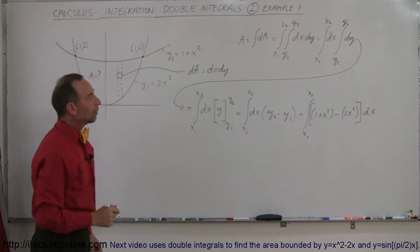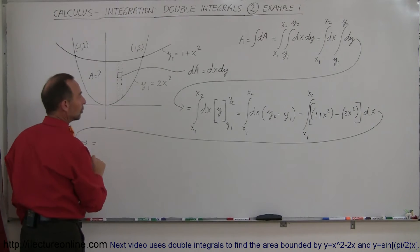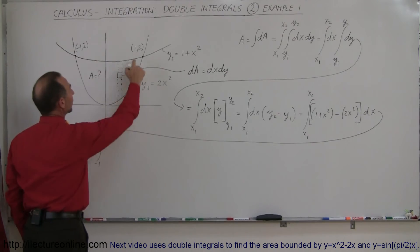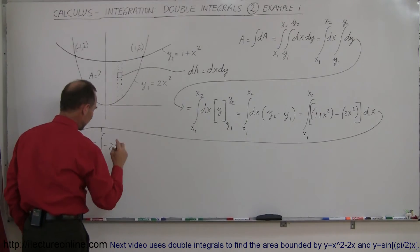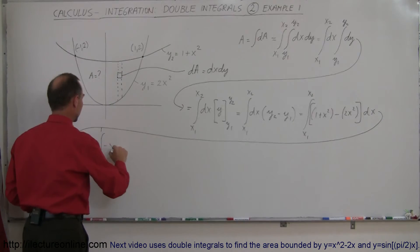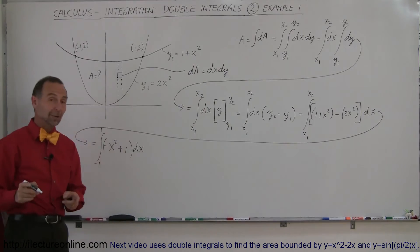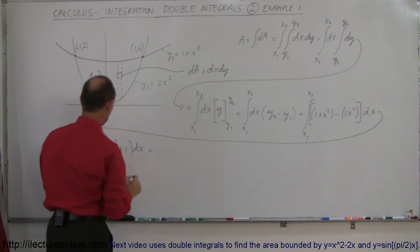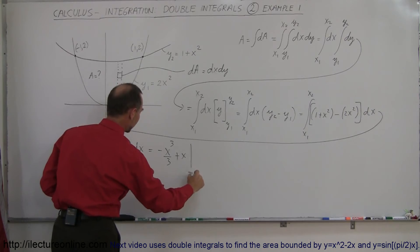Now we can simplify and plug in our x limits of integration. This is equal to the integral from negative 1 to positive 1 of (1 plus x squared minus 2x squared) dx. Simplifying, x squared minus 2x squared gives minus x squared, so the integrand becomes 1 minus x squared. Now we're ready to integrate in the x direction: minus x squared becomes minus x cubed over 3, plus x, evaluated from negative 1 to 1.